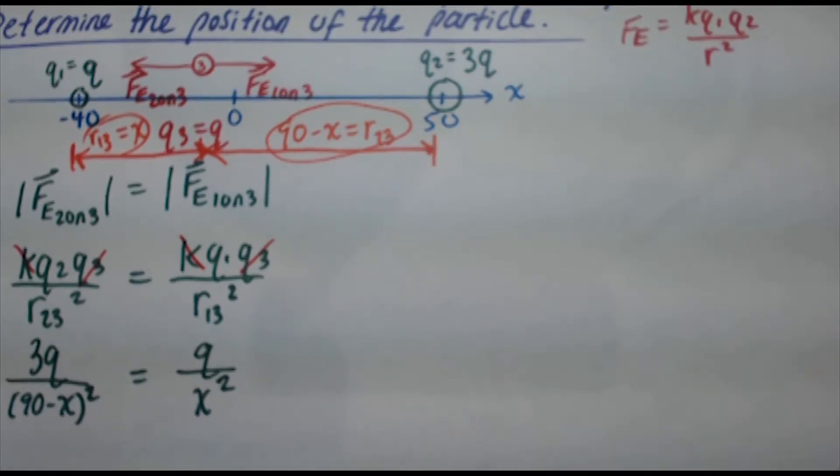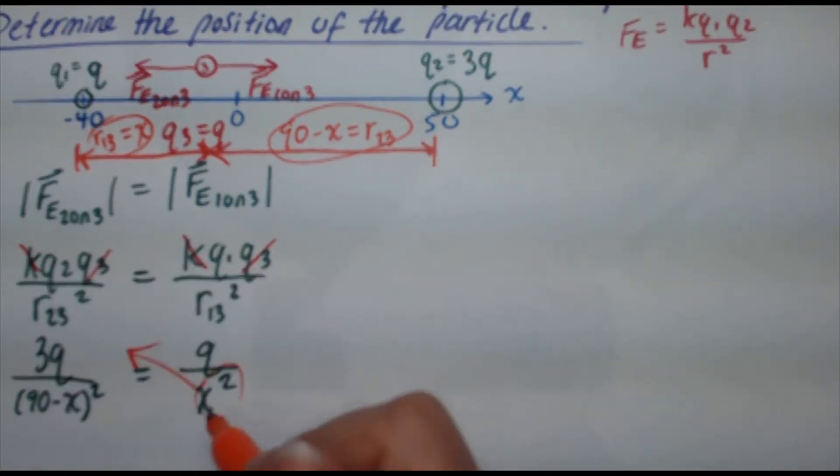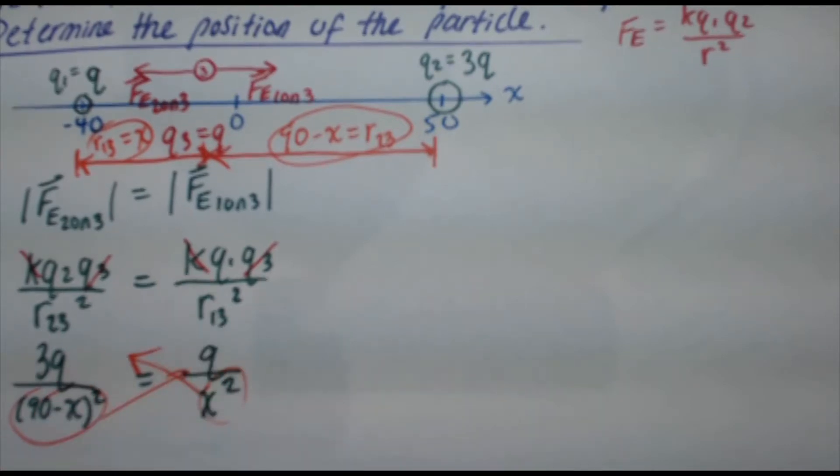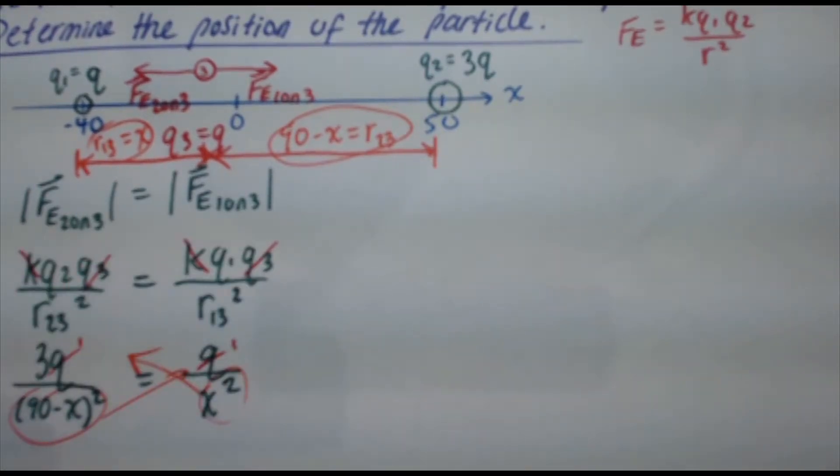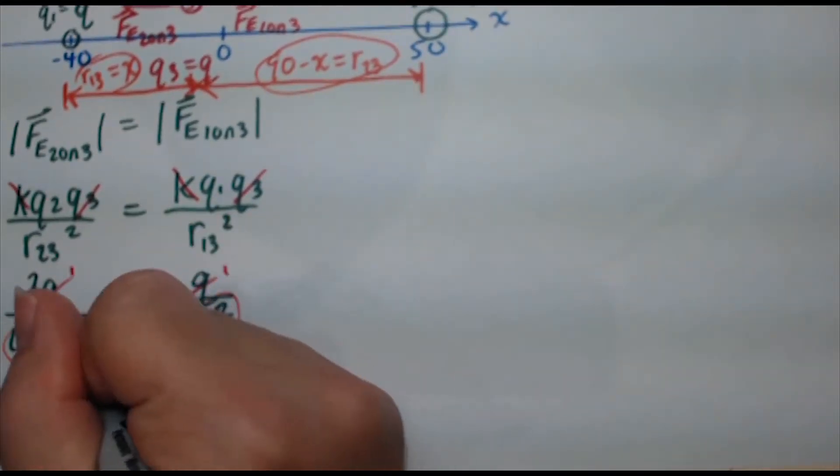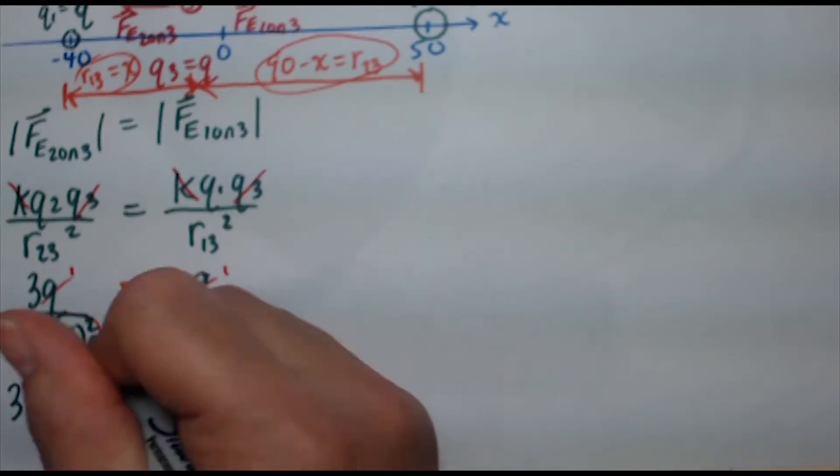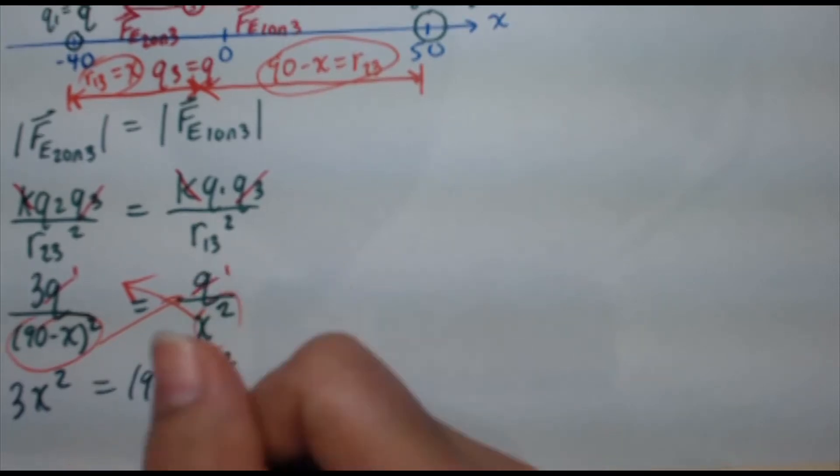So I want to get everything in the numerators here. So if you see, I'm going to cross multiply the x squared to the left numerator, the 90 minus x squared to the right side numerator. Now, there's one more cancellation I forgot to do. The qs actually cancel as well, so that makes things a lot easier. So now it's going to become 3x squared equals bracket 90 minus x, close brackets squared.